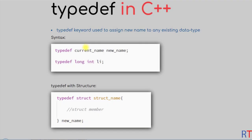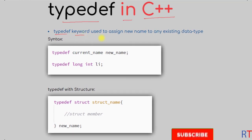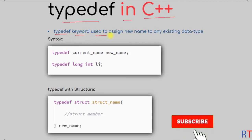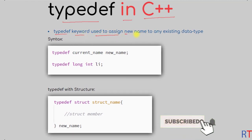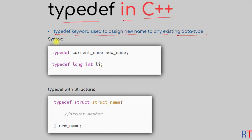In this video we're going to talk about typedef in C++ programming. The typedef keyword is used to assign a new name to any existing data type. The syntax is: first you have the typedef keyword, then the current name of the data type, and then you can assign one new name to the existing data type.